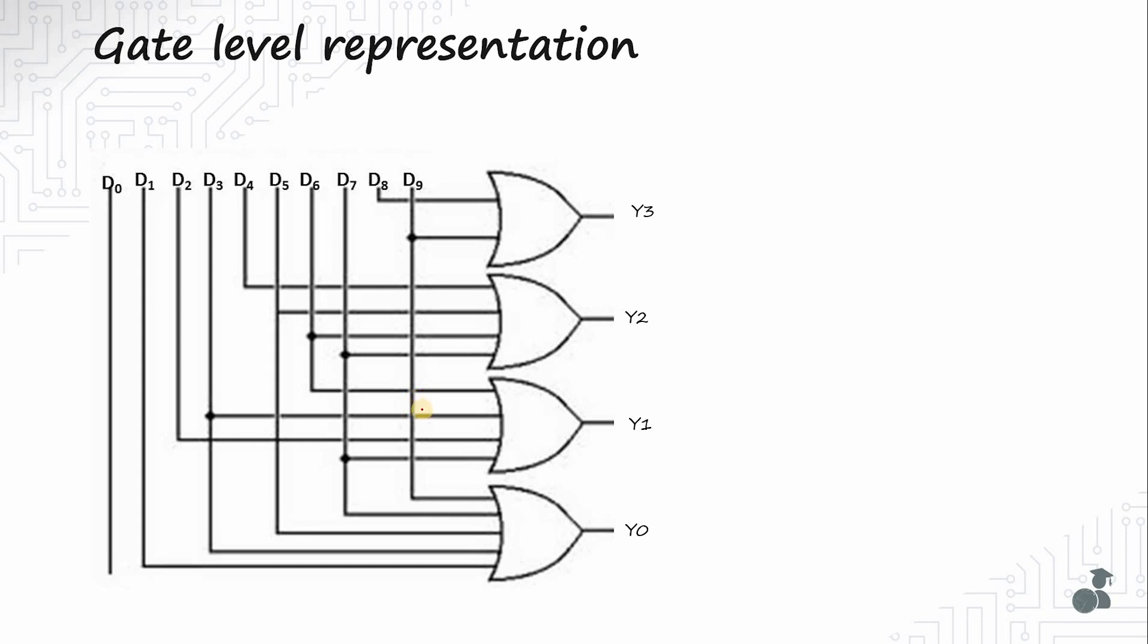Now let's suppose the user pressed 3 buttons at once: Button 2, 3, and 6. So d2, d3, and d6 are 1. For these inputs let's see what we'll get as the output. d6 goes to input of y2 and y1, so y2 and y1 will be high. d3 goes to input to this gate as well as this gate, so again y1 and y0 will be high. d2 goes as input to this gate, so this will be high. The output will be 0111, which is actually 7. But the user just pressed 2, 3, and 6 buttons. You can see the problem here when the user pressed more than 1 button. It gave an output of 7 but we hadn't even pressed button 7.